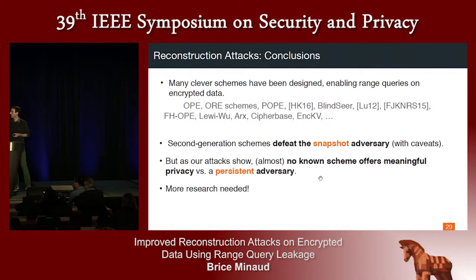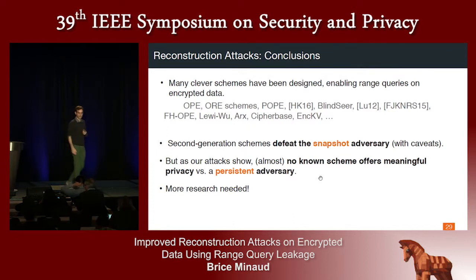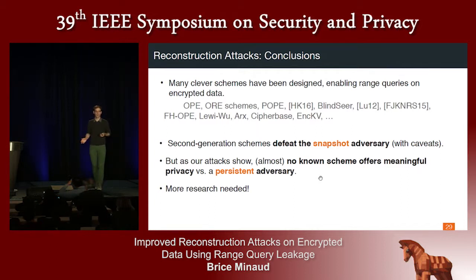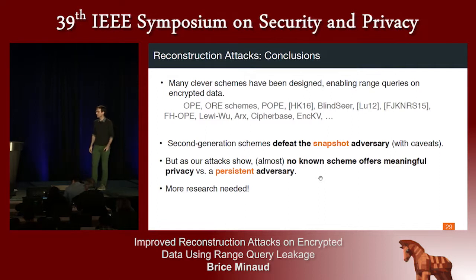The takeaway is this: there are many schemes trying to achieve range query functionality. Some second-generation schemes can achieve a meaningful amount of security against a snapshot adversary that just steals the server's memory at one point. But essentially all schemes that leak access pattern leakage — and that's almost all of them — do not offer any meaningful security against the persistent adversary. If you're using such schemes, you have really no meaningful guarantee that the server cannot learn your data, and in fact it can after surprisingly few queries.